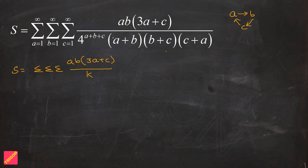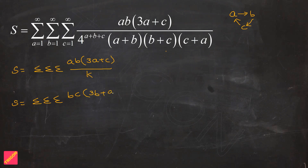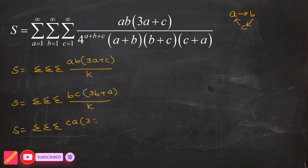The fact that only the numerator changes is the key clue we will take advantage of. So S is our original triple summation. Applying the first cyclic change (a→b, b→c, c→a), we get: the term ab·(3a+c)/k becomes bc·(3b+a)/k. Applying the cyclic change one more time, b→c, c→a, a→b, we get the triple summation of ca·(3c+b)/k.